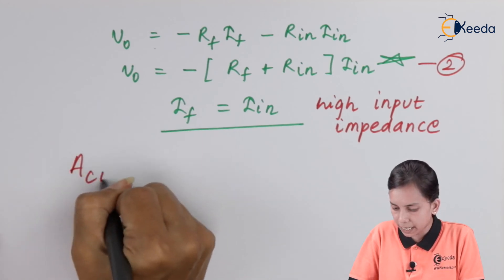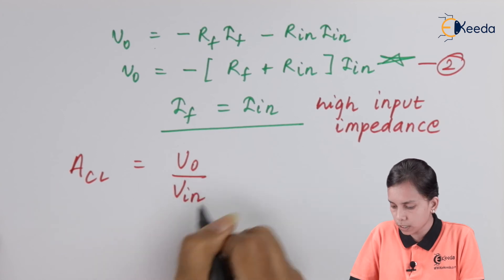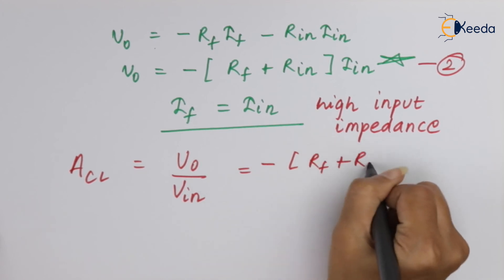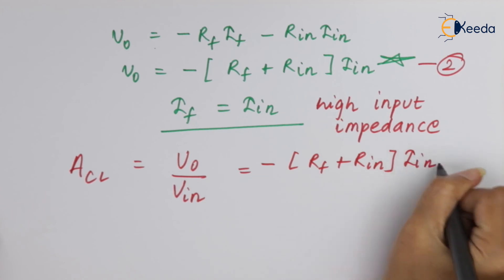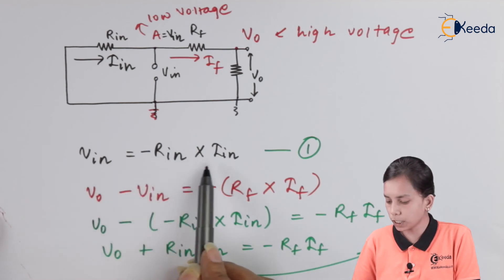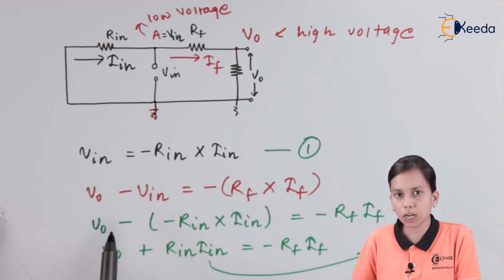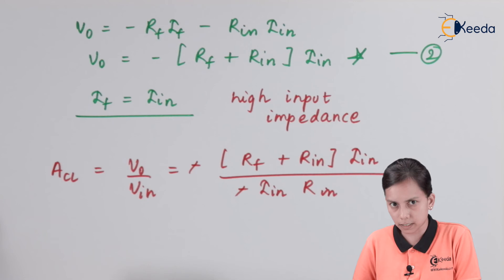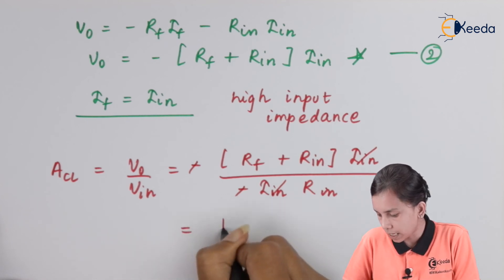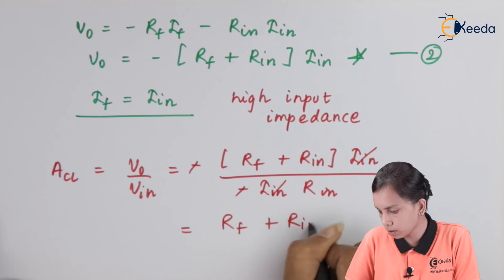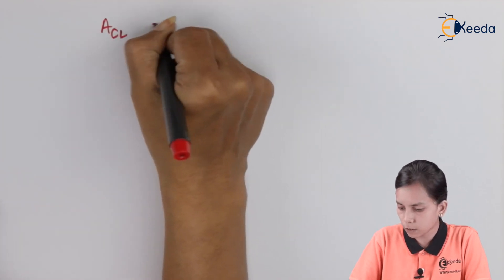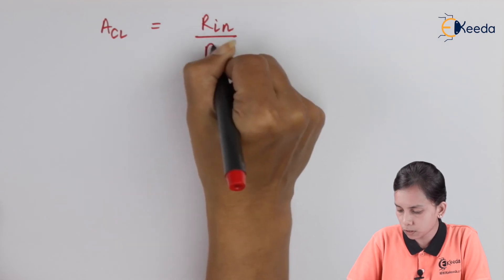Since the closed loop gain is V_0 divided by V_input, we substitute equation 2 for V_0 and equation 1 for V_input (which is minus R_input times I_input). The minus signs cancel and I_input cancels, giving ACL equals (R_F plus R_input) divided by R_input.